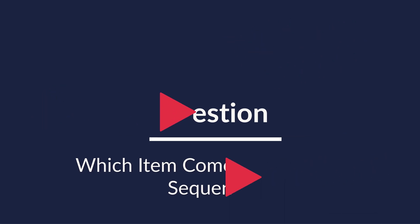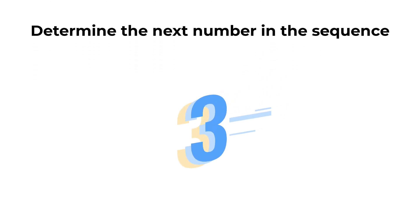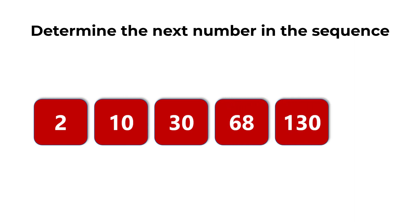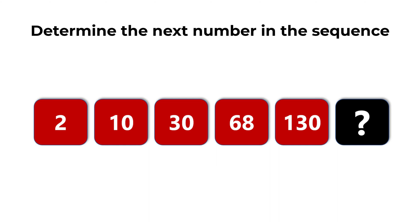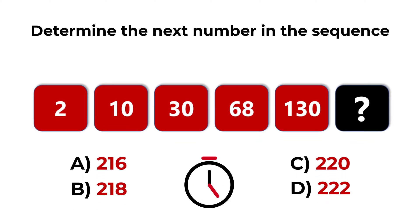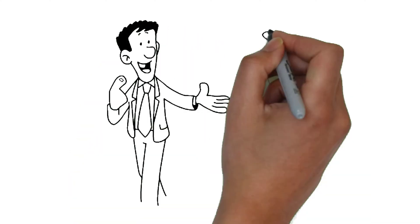It is almost guaranteed you will get questions like this on every test. You're presented with a sequence of numbers: 2, 10, 30, 68, 130, and the next number is missing. Can you determine what comes next? The four choices are: A) 216, B) 218, C) 220, and D) 222. Pause this video and give yourself 20 to 30 seconds — that's about as much time as you get on the real test.